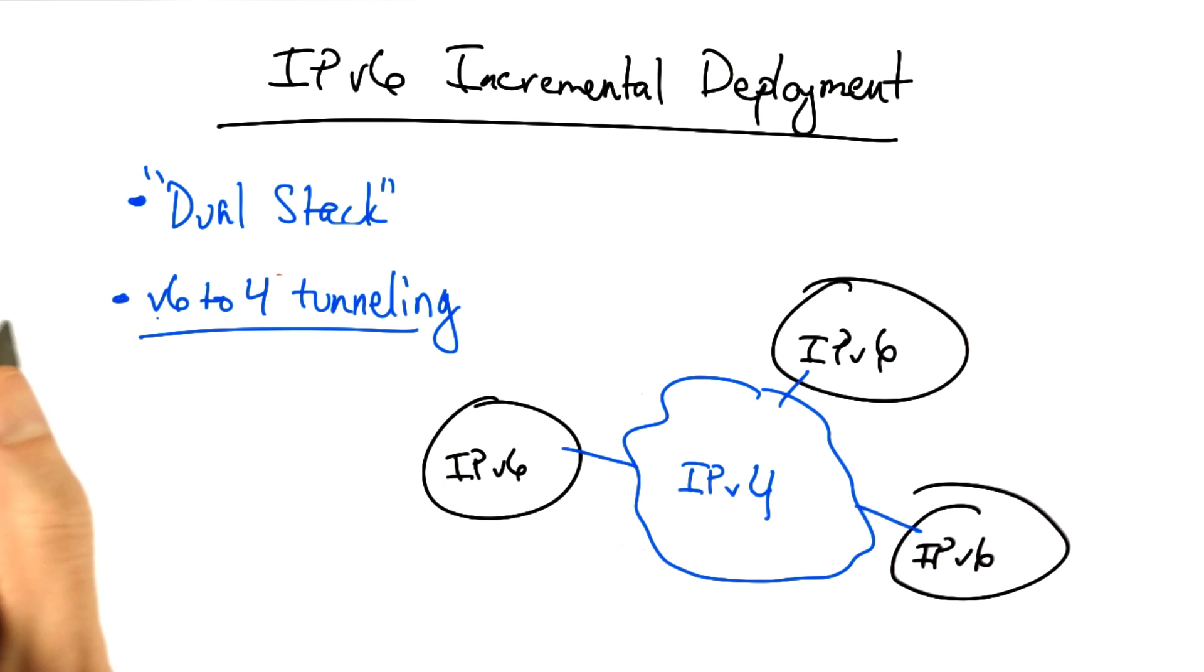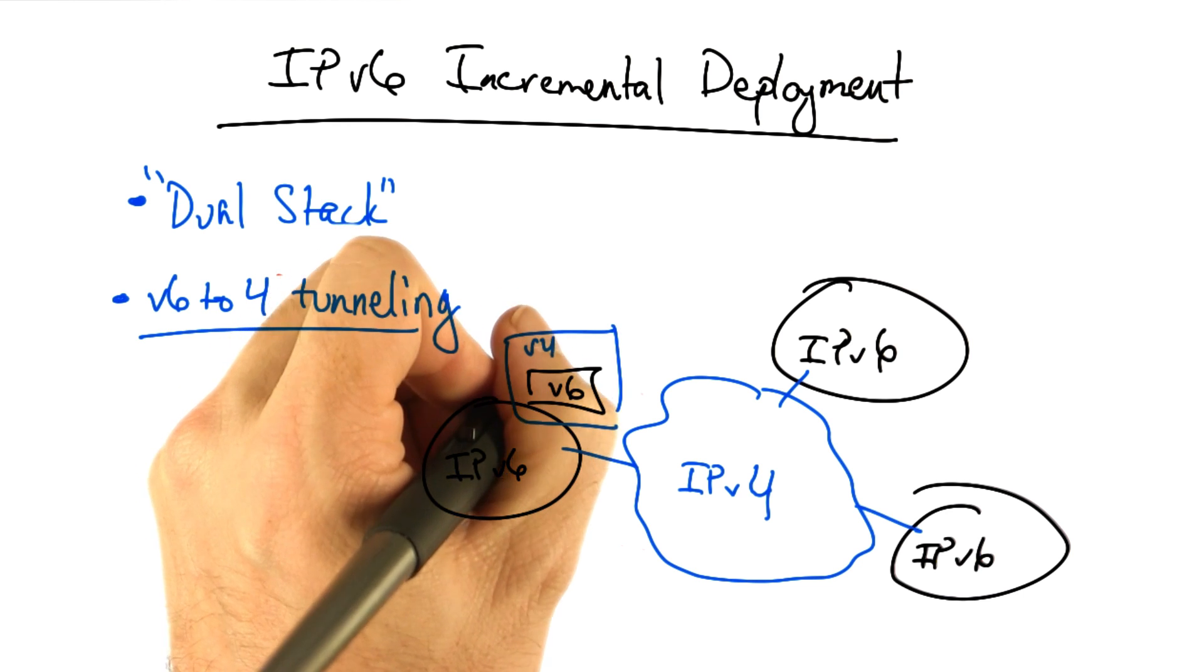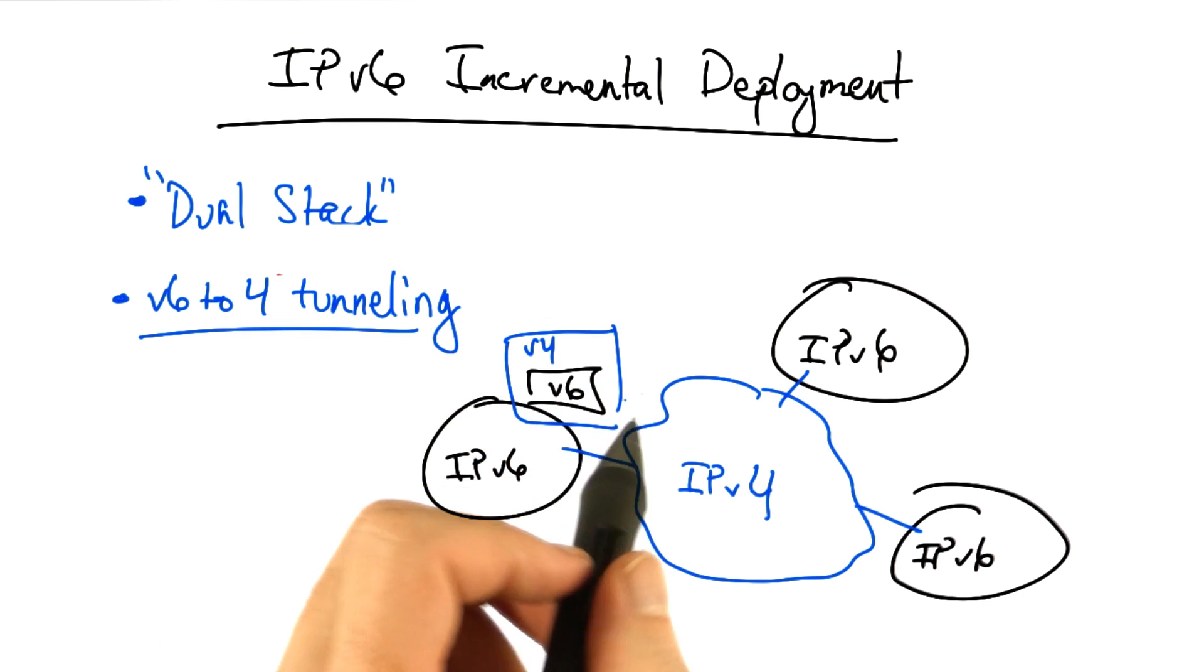Well, the solution here is to use what's called 6 to 4 tunneling. In 6 to 4 tunneling, a v6 packet is encapsulated in a v4 packet.